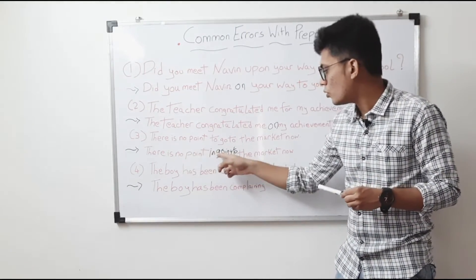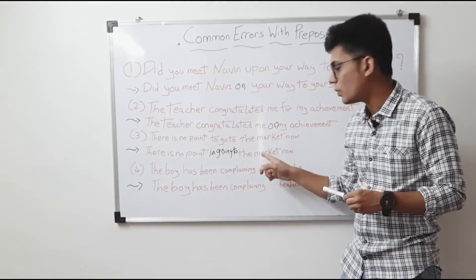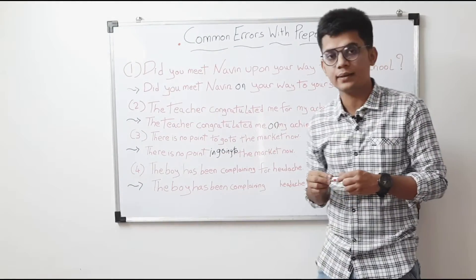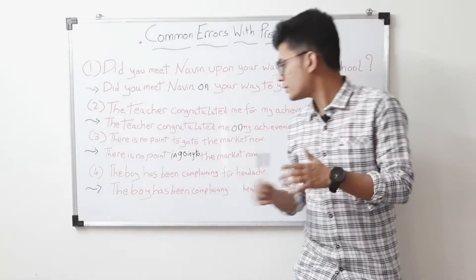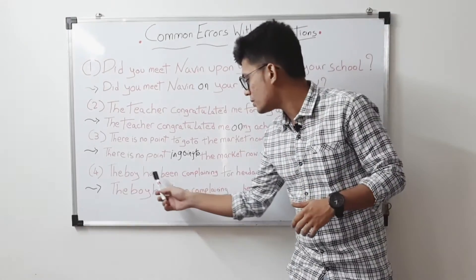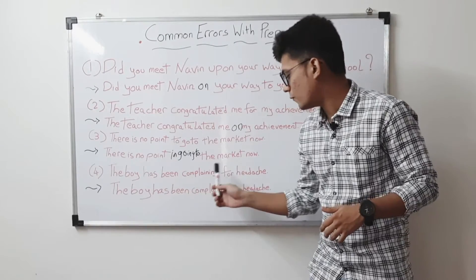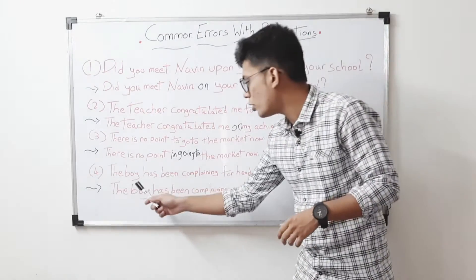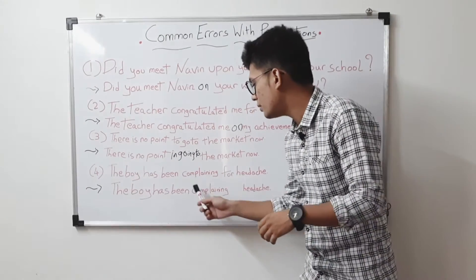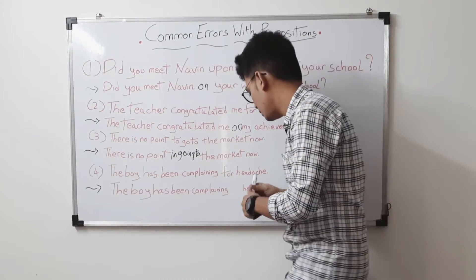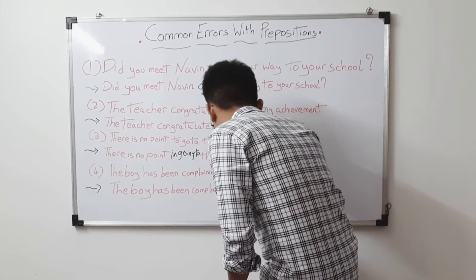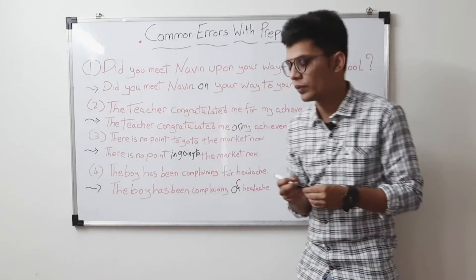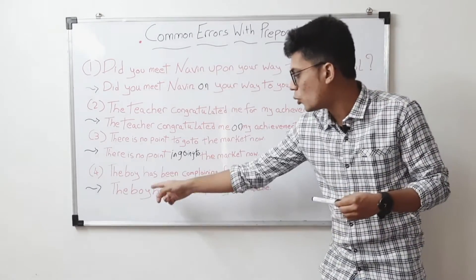Fourth sentence: 'The boy has been complaining for headache.' That is wrong. The correct sentence is: 'The boy has been complaining of headache.' — 'of' is the correct preposition to use with 'complaining.'